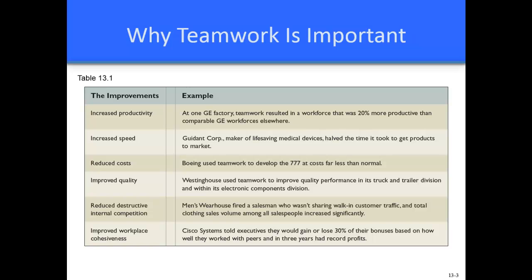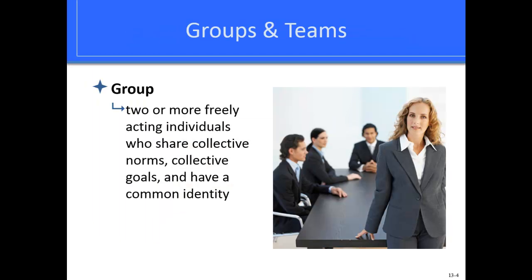A group of people and a team of people are not the same thing. A group is defined as two or more freely interacting individuals who share collective norms and goals and have a common identity. It is different from a crowd, which is a transitory collection of people who don't interact with one another. It's also different from an organization such as a labor union, which is so large that members also don't really interact.